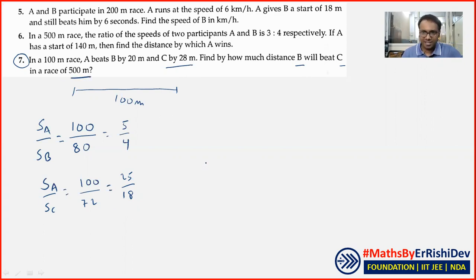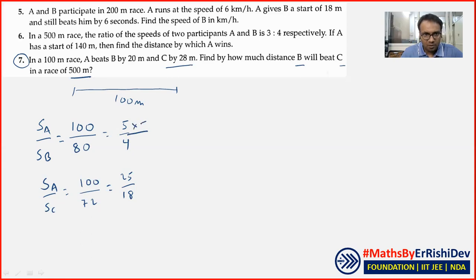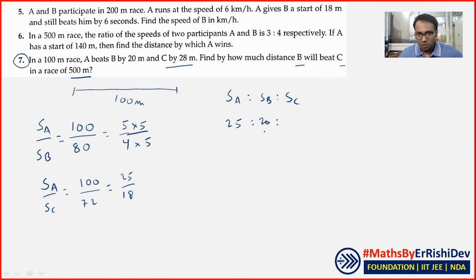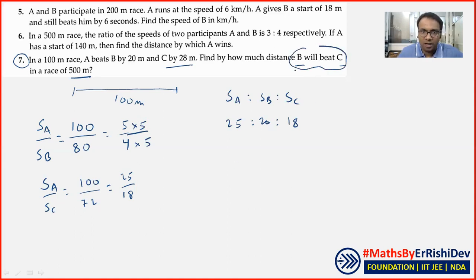Fantastic question! اب کیا کرنا پڑے گا — جو common ہے اس کو equate کرو۔ دونوں ratios میں A common ہے۔ یہاں 5 ہے، یہاں 25 ہے، تو 25 بنا دو — 5 سے اوپر نیچے multiply کرو۔ SA : SB : SC میں B کو same کرنا ہے۔